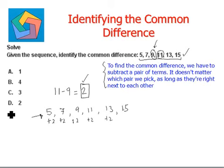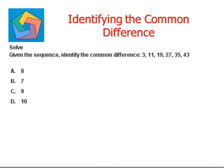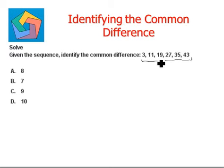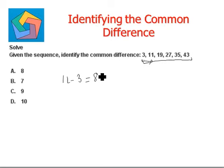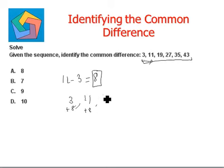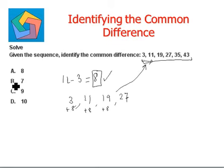Let's try the next one: given the sequence 3, 11, 19, 27, 35, 43, identify the common difference. Let's pick the first and second terms: 11 minus 3 equals 8. Let's verify: 3 plus 8 is 11, 11 plus 8 is 19, 19 plus 8 is 27 — we get the same sequence, so 8 is the common difference, which is option A.